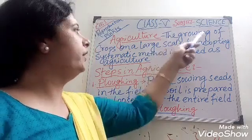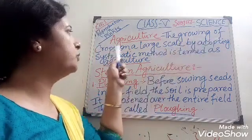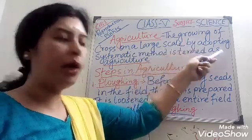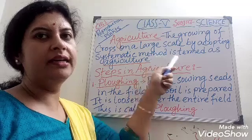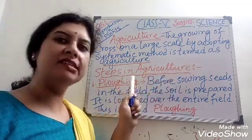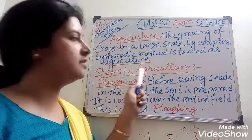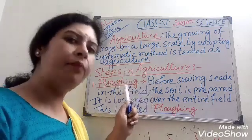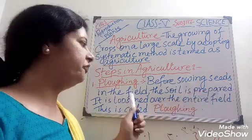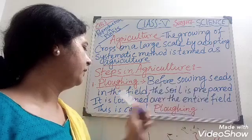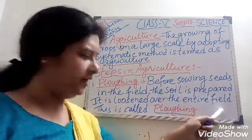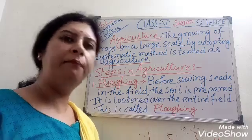Agriculture — the growing of crops on a large scale by adopting a systematic method is termed as agriculture. Now the steps in agriculture: first, plowing. Before sowing seeds in the field, the soil is prepared. It is loosened over the entire field. This is called plowing.